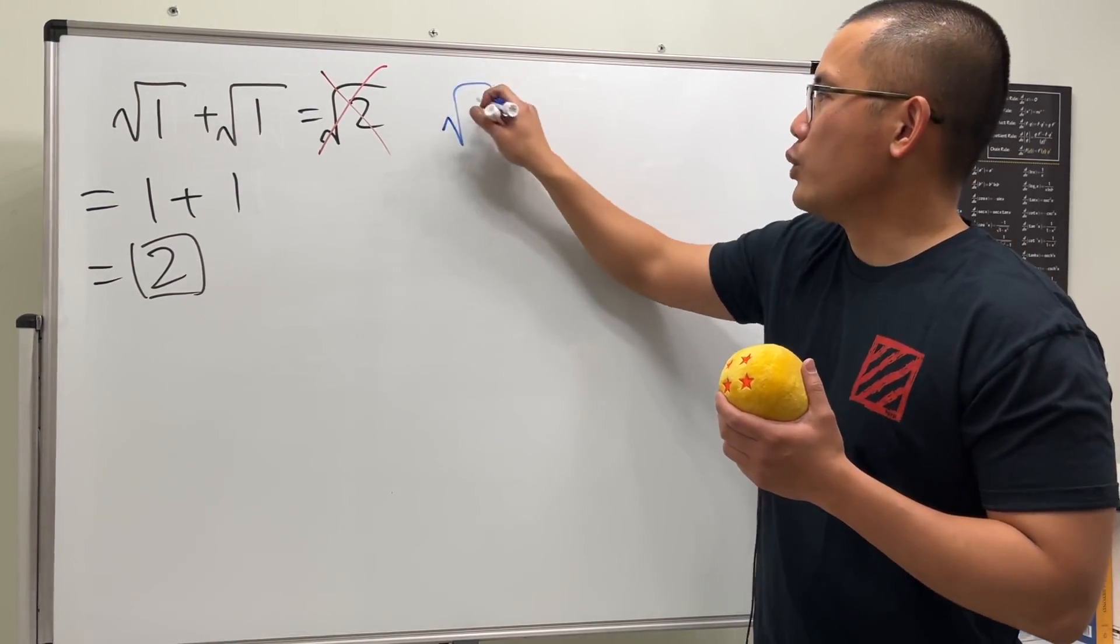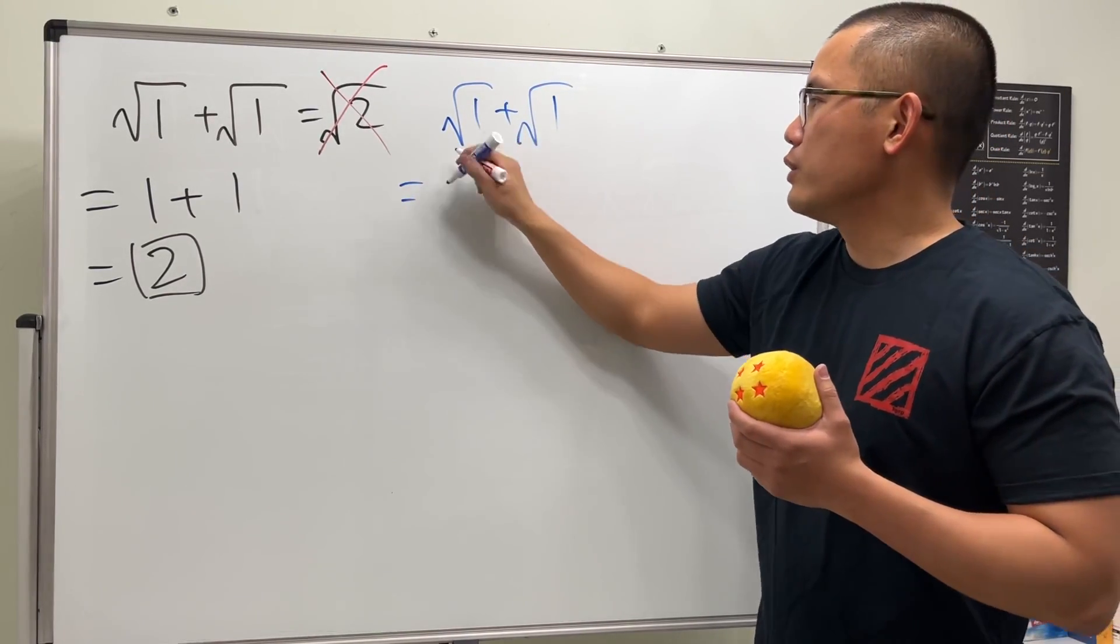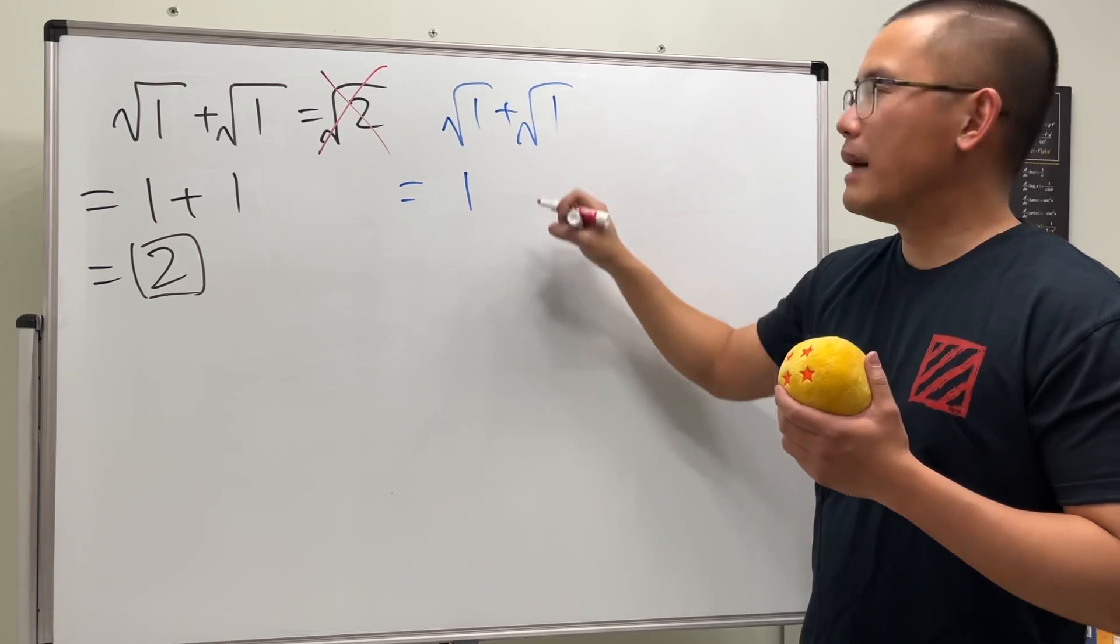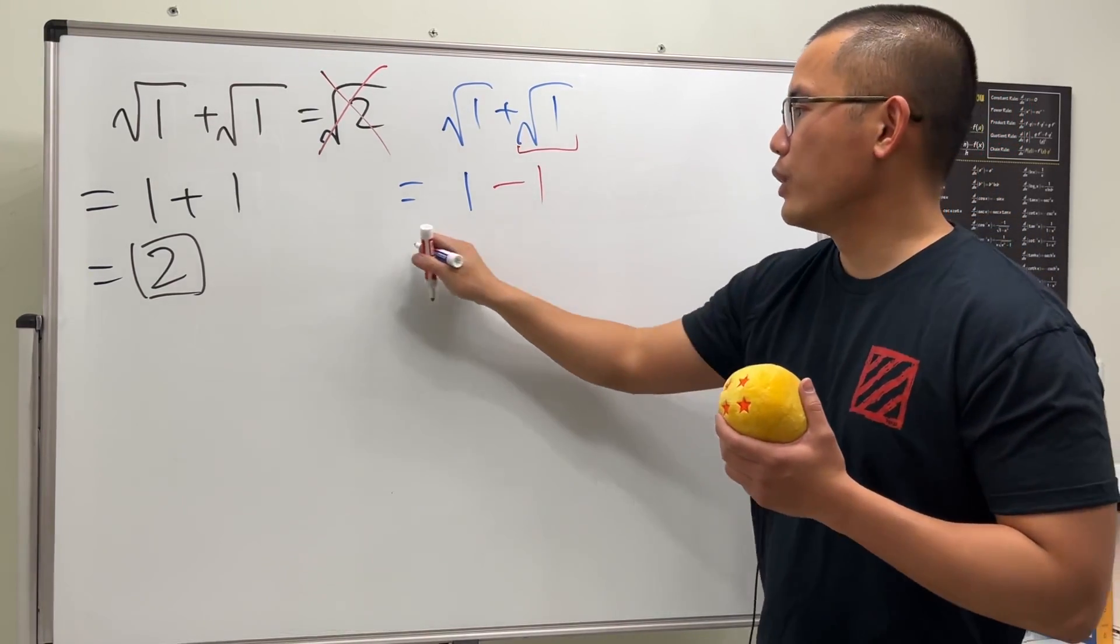A lot of people will tell you when we have square root of 1 plus square root of 1, well, this square root of 1 right here to them is positive 1. Okay, but for this square root of 1, they will say this is negative 1. And then 1 minus 1 is equal to 0.